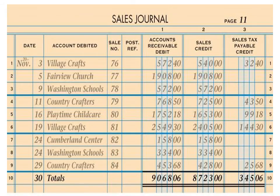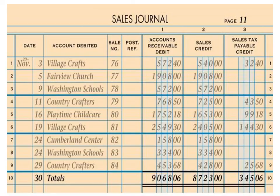Looking at a completed Sales Journal: the Accounts Receivable Debit and Sales Credit columns will always be filled in — that's the point of the Sales Journal. When a customer is tax exempt, like Fairview Church, the Accounts Receivable Debit equals the Sales Credit, and the Sales Tax Payable column is empty. Only the company name is written in the account column, not 'Accounts Receivable.' When finished, you total and rule: draw a single line, add up each column, and verify that your Accounts Receivable Debit equals Sales Credit plus Sales Tax Payable Credit. That proves and rules the journal.